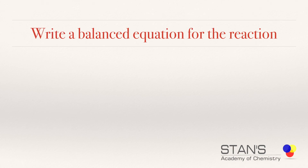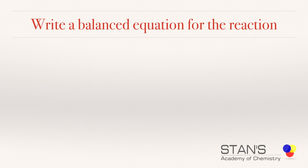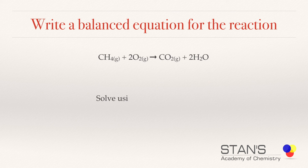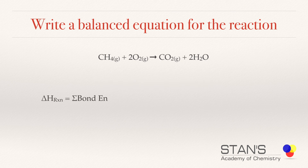The first thing to do is to write a balanced equation for the reaction. One mole of methane reacts with two moles of oxygen to form one mole of carbon dioxide and two moles of water. The equation we are going to use is: ΔH reaction = sum of the bond energies of the reactants minus sum of the bond energies of the products.